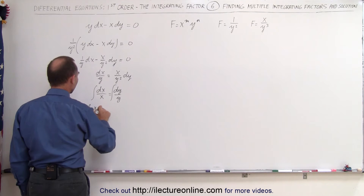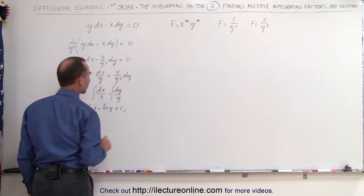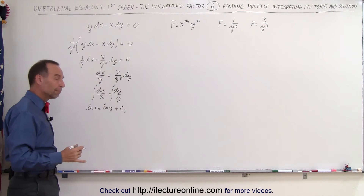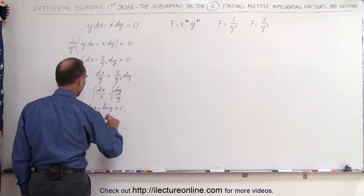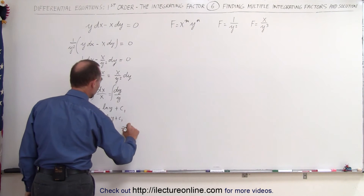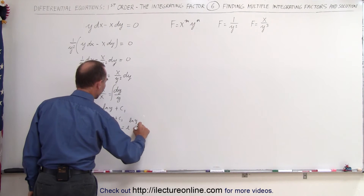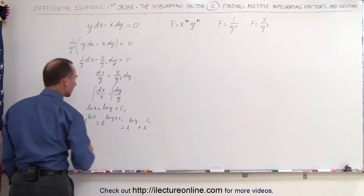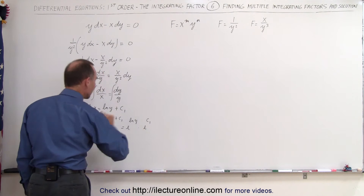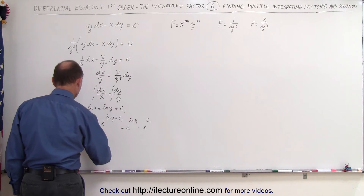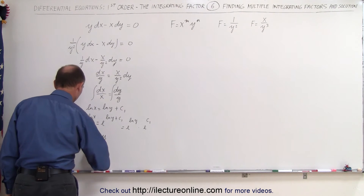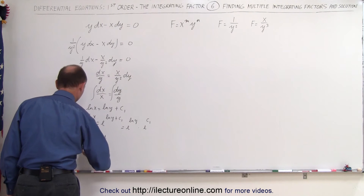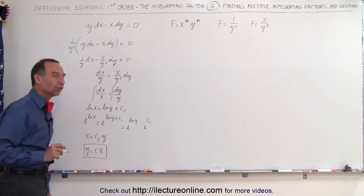Integrating both sides, we end up with the natural log of x equals the natural log of y plus some constant of integration c1. Taking the antilog of both sides, e to the natural log of x equals e to the natural log of y times e to the c1. This gives us x equals c2 times y, or equivalently y equals c times x — the solution to this differential equation.